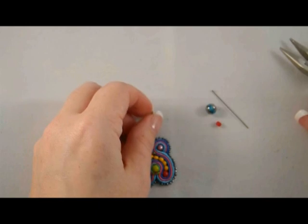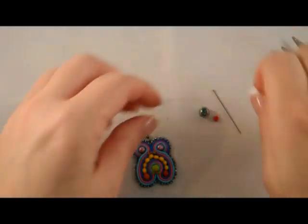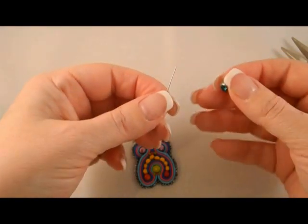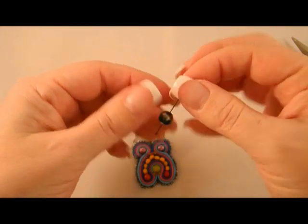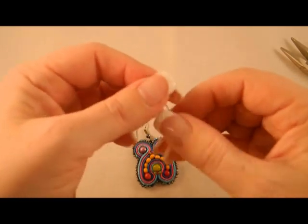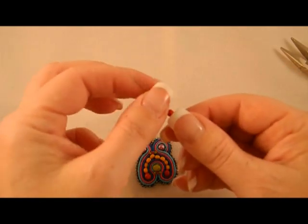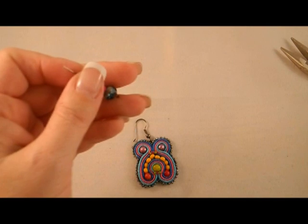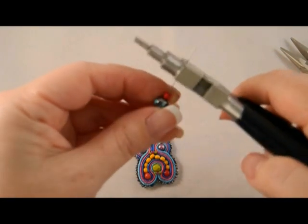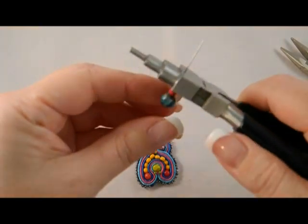You're now ready to add the decorative drop. Take your head pin and thread on the focal bead and the size 6 seed bead. Using the flat portion of your looping or rosary pliers, you're going to bend the head pin just above the beads at a 90 degree angle.